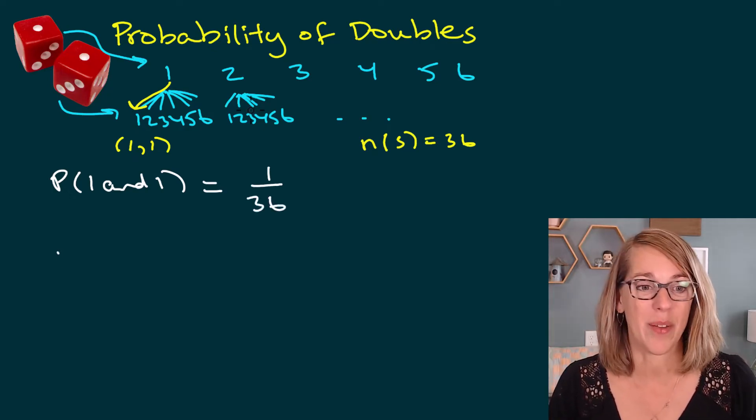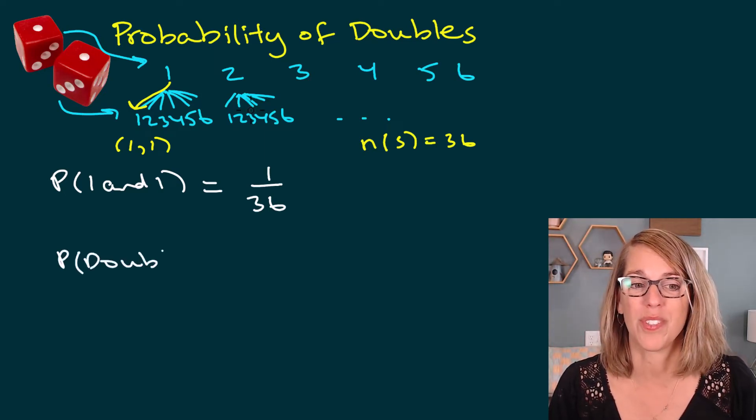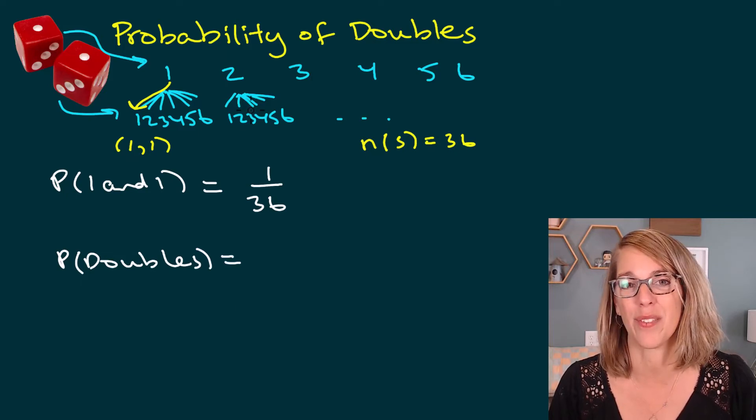Next, let's do any double. So the probability of getting any doubles. So this would be double twos, double threes, double fours, any of those doubles.